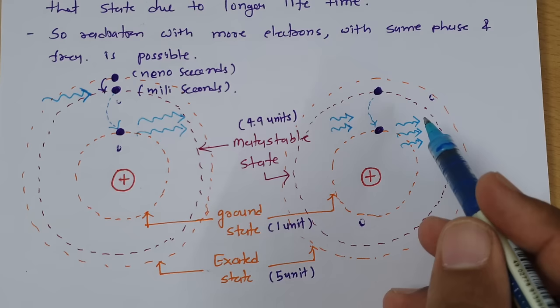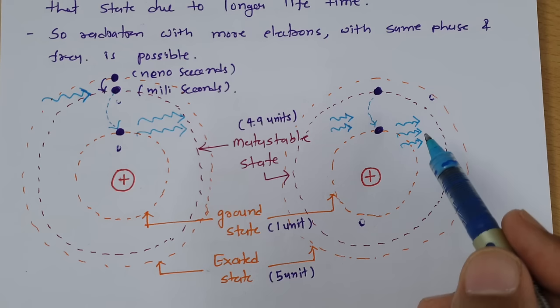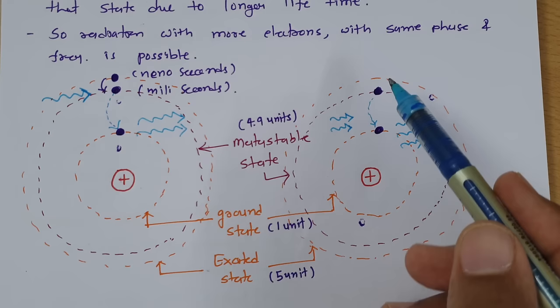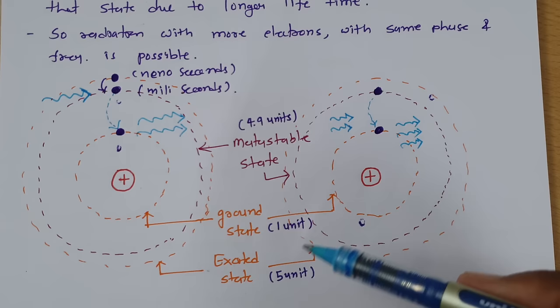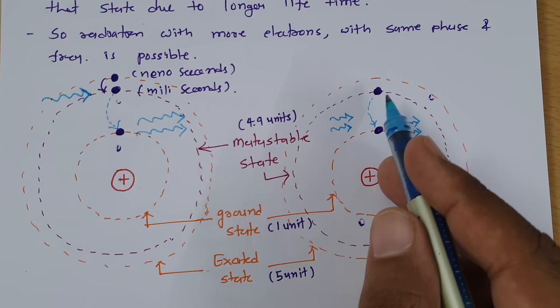Population inversion increases the directivity of photon radiation. If the energy transition from higher to lower energy state stays in the range of 4000 angstrom to 8000 angstrom — which is the visible region — then one can see light being emitted with some finite colors.